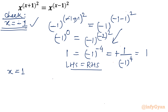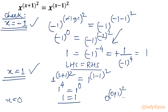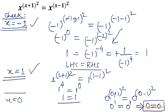For x = 1: LHS is 1^(1+1)² = 1^4 = 1. RHS is 1^(1-1)² = 1^0 = 1. So 1 = 1, which is true. For x = 0: 0^(0+1)² = 0^(0-1)², i.e., 0^1 = 0^1, so 0 = 0. Since the equation is not in rational form this time, we get the correct answer and x = 0 is a true solution.